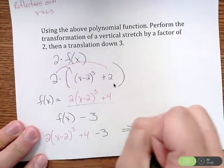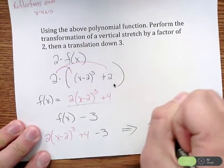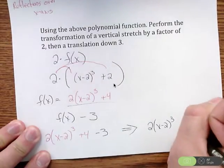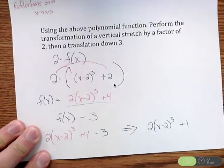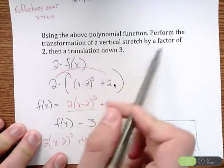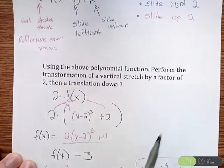The only thing we'll have to do is simplify there. What we have is we have a 4 minus 3. That's something we can combine like terms there. So our answer is going to be 2 x minus 2 cubed. 4 minus 3 is plus 1. So this would be our new function with the transformation of a vertical stretch by 2 and a translation down 3 from our original.